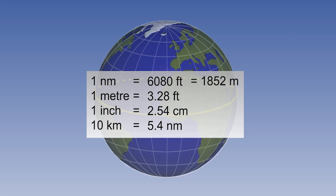One nautical mile is 6080 feet or 1852 meters. One meter is 3.28 feet. One inch is 2.54 centimeters. And 10 kilometers is 5.4 nautical miles.